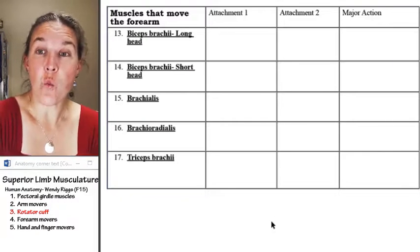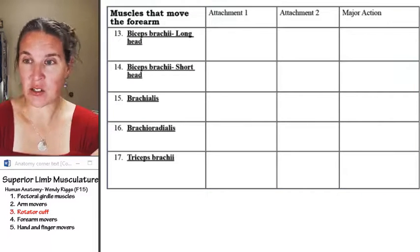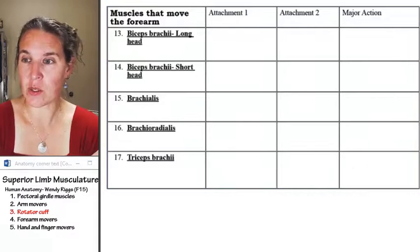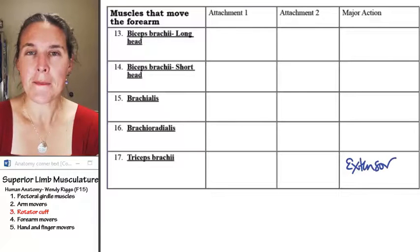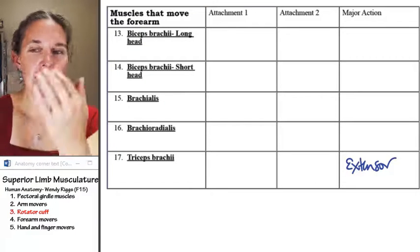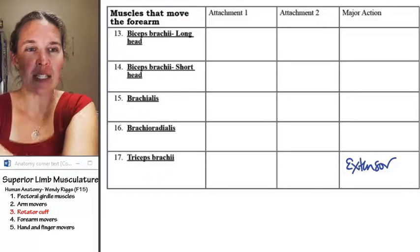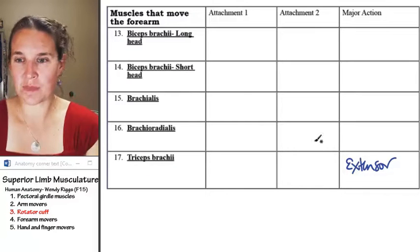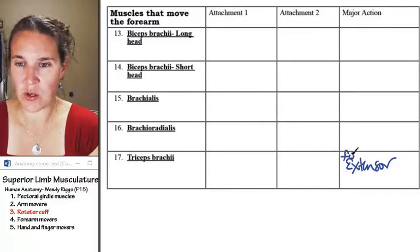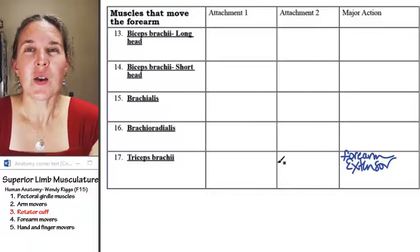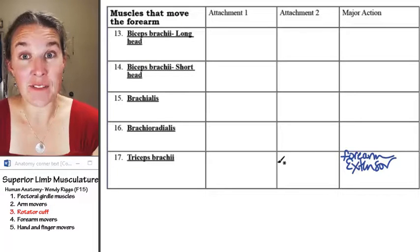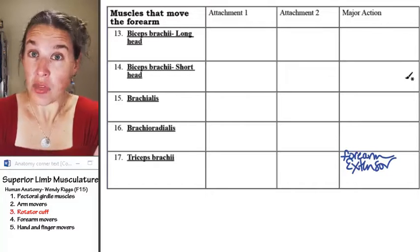We actually only have one forearm extensor. And who is that? You know that's triceps. And if triceps is extending the forearm, let's make sure we're talking just extension of the forearm. Where does one of our attachments have to be? On the forearm.